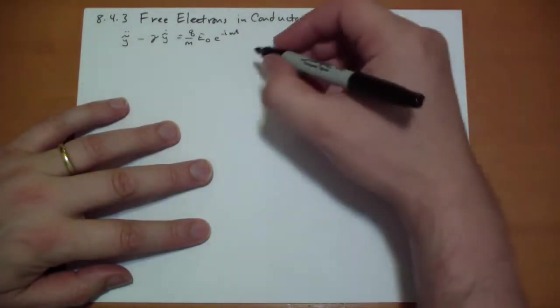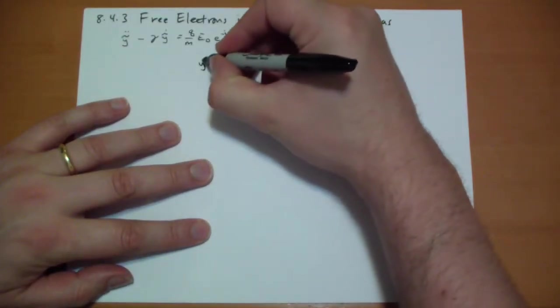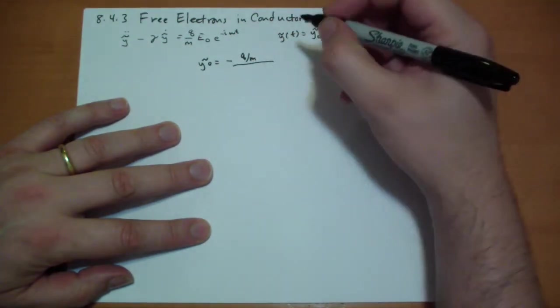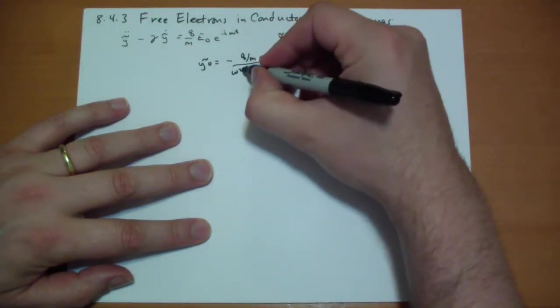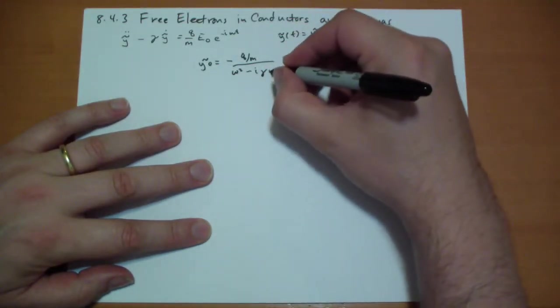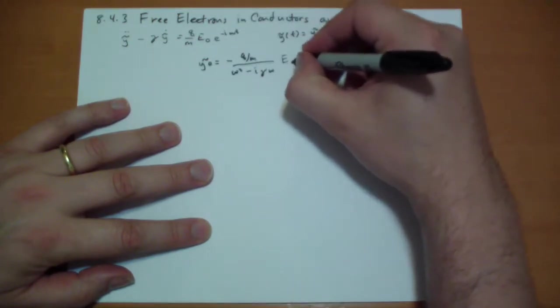And the solution is, of course, y-complex is equal to some y-naught times e to the i omega t. And where y-naught is just, if you plug it in, plug and chug, you'll get y-naught is equal to minus q over m divided by omega squared, the frequency of the driving frequency minus i times the damping times omega e-naught.